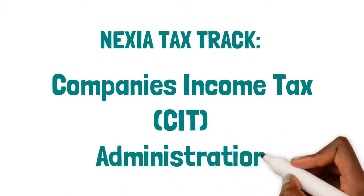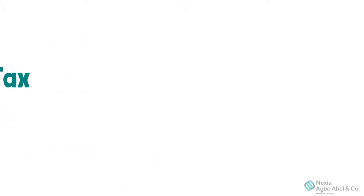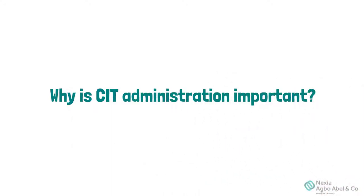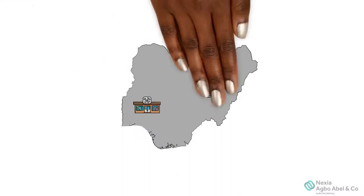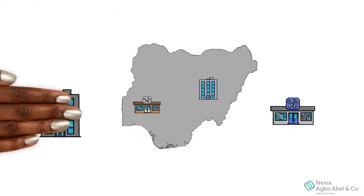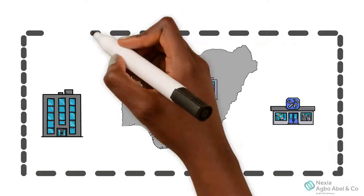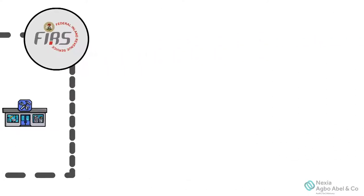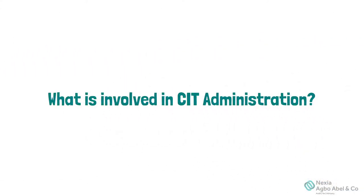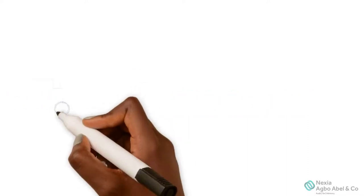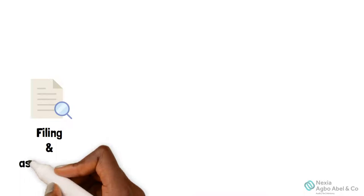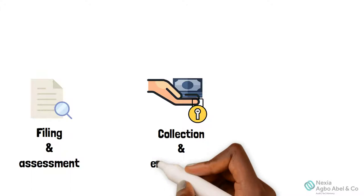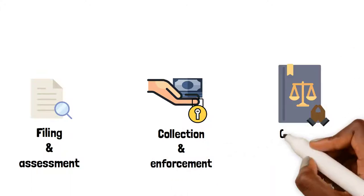Companies Income Tax (CIT) administration is important for one obvious reason: it ensures that all resident and non-resident companies comply with relevant tax laws, and that applicable taxes assessed are collected and used in the development of the country. CIT administration involves tax filing and assessments, collection and enforcement, and objection and appeal under the relevant laws and statutes.